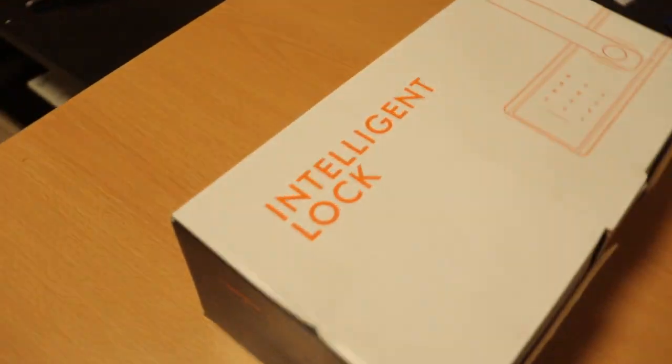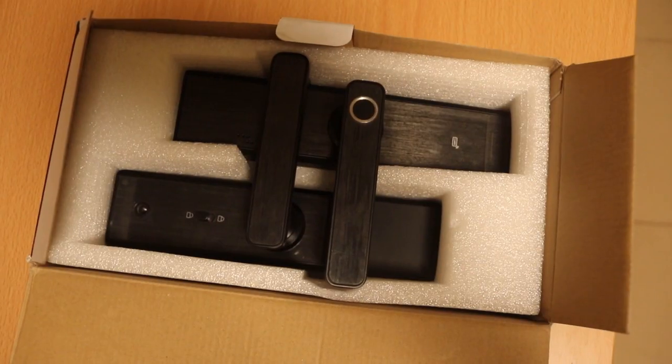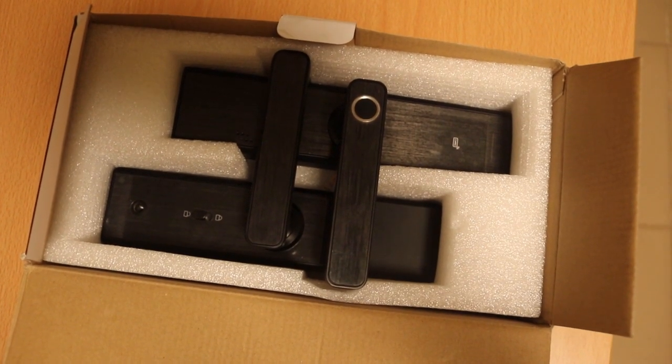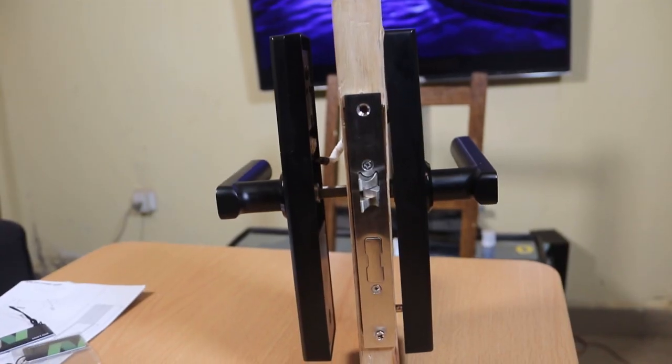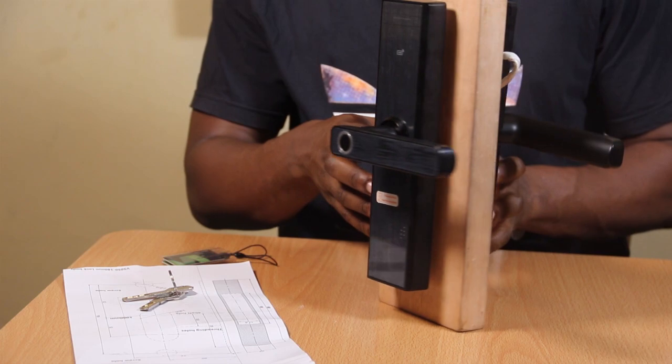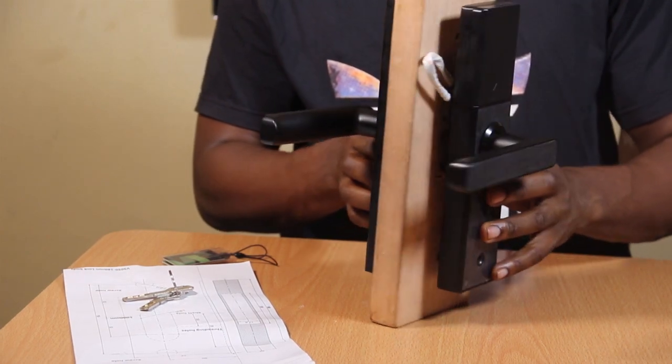So this is the Toya fingerprint door lock and I have it mounted on this wooden prototype door. This is what it looks like - this is the back panel and this is the front panel.